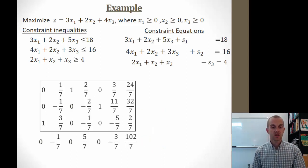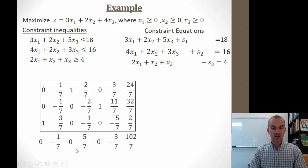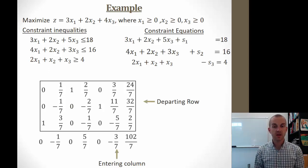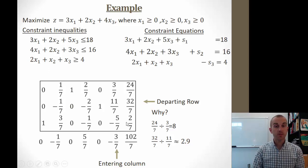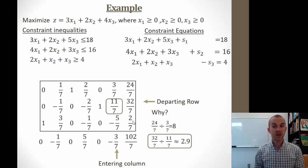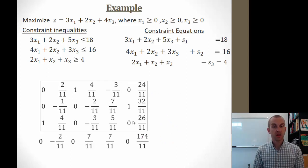I multiply the entire first row by 2/7 to make that pivot entry become 1, then row-reduce the other three rows so all other values in that column become zeros. The resulting matrix is a new simplex tableau — even with fractions we keep going, because all values are still in feasible regions. I identify negative 3/7 as the greatest negative, making it my entering column. The departing row is the second row: 24/7 divided by 3/7 gives 8, and 32/7 divided by 11/7 gives about 2.9, so I choose the row with 11/7. The third row gives a negative solution so I ignore it.